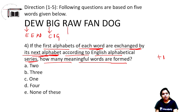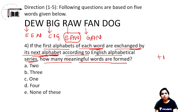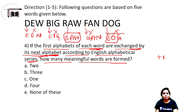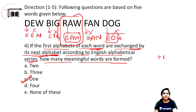Checking the words after replacing the first letter with the next in the alphabet: E-E-W, then I-N, then B-C-I-G, then R-S-A-W — 'SIR' is one meaningful word. G-A-N — no. D-E-O-G — no. Only one meaningful word is formed. So option C is the correct answer.